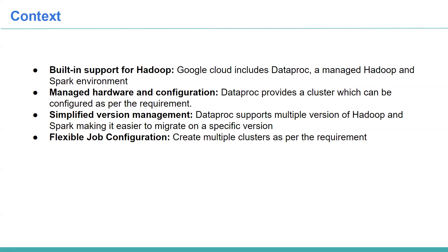Let's have some context on why we want to use Hadoop on Google Cloud Platform. Since we are in an on-premise setup and want to migrate to GCP, we need to check compatibility. GCP provides built-in support for the Hadoop platform through a service called Dataproc, which is a managed Hadoop and Spark environment. It looks similar to what we have in on-premise setups — for example, a Cloudera setup can be replaced with GCP using Dataproc.